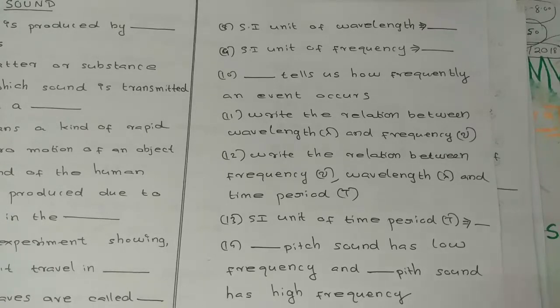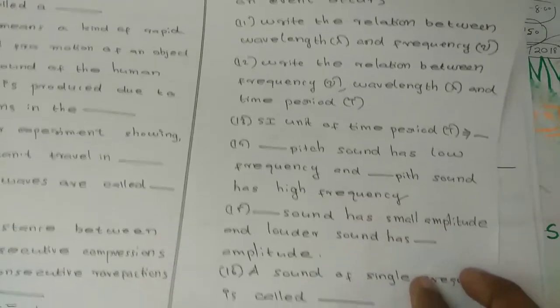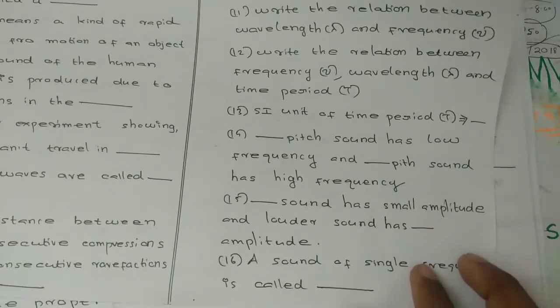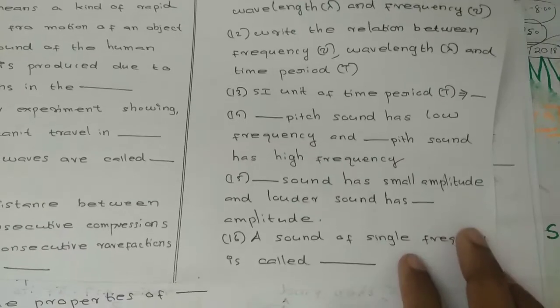Q13: A unit of time period capital T is equal to dash. Q14: Dash which sound has low frequency, and dash which sound has high frequency.